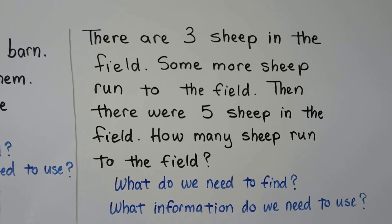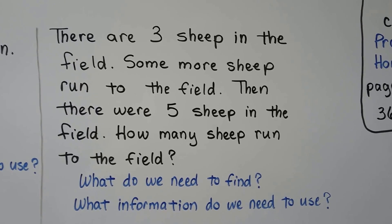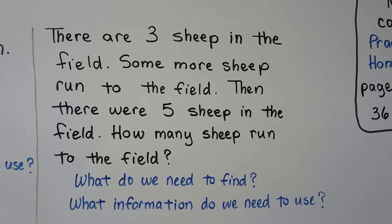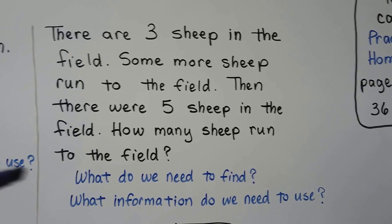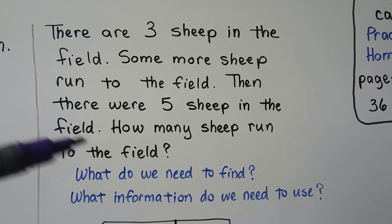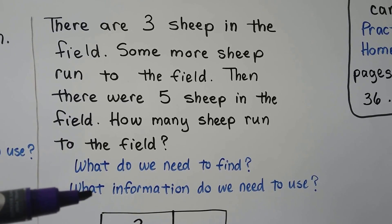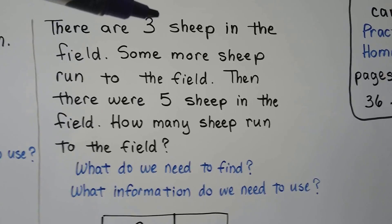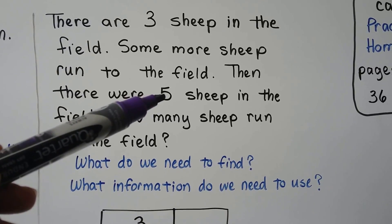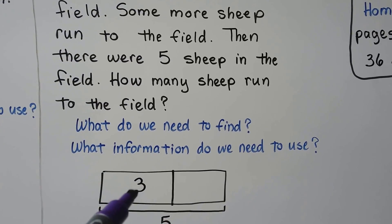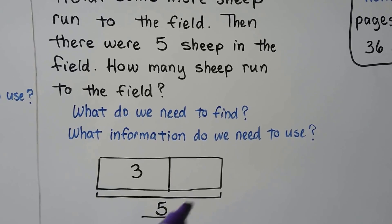There are three sheep in the field. Some more sheep run to the field. Then there were five sheep in the field. How many sheep ran to the field? We need to find how many sheep ran to the field. We need to know that there were three sheep already in the field, and in the end there were five sheep. We don't know how many ran to the field, but then there were five.